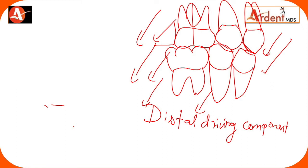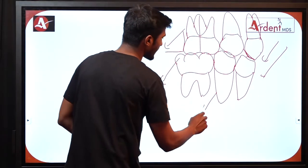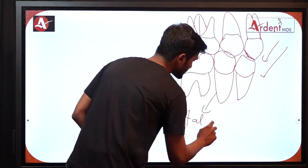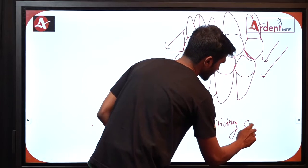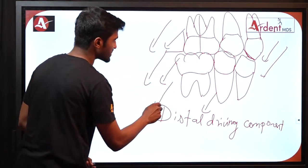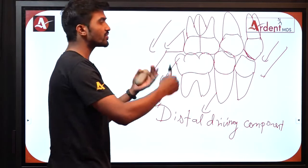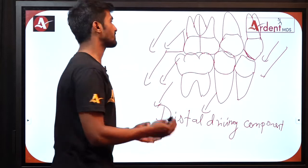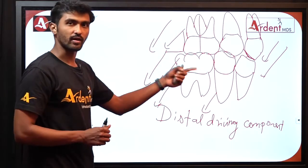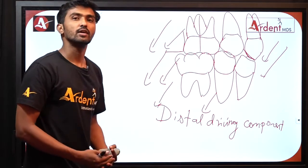According to Clark's philosophy, in disto-occlusion we have occlusal forces from the cuspal guide planes acting in the distal direction — a distal driving component. This distally directed force locks the mandible distally, not allowing it to grow mesially or anteriorly, which worsens the malocclusion and fully establishes Class 2. The distal component of force from the developing malocclusion locks the mandible in a posterior or retruded position, thereby establishing a full-fledged malocclusion.